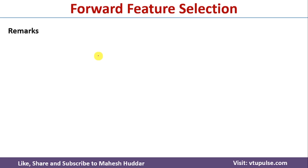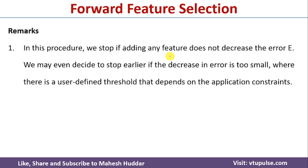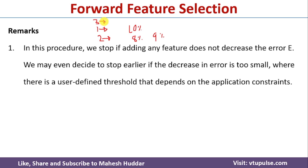With respect to forward feature selection, we need to remember a few points. First, we need to stop adding any feature that does not decrease the error. For example, if we have one feature with 10% error, and adding a second feature reduces the error to 8%, that is fine. But if adding a third feature causes the error to increase to 9% instead of decreasing, we should not add that feature.